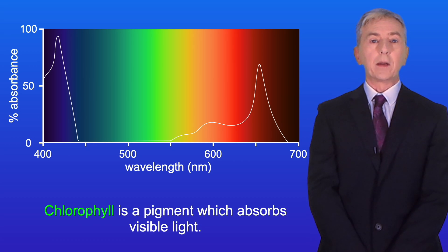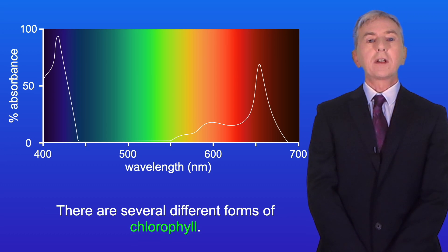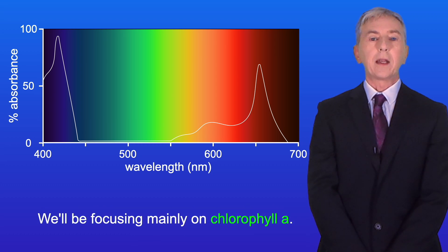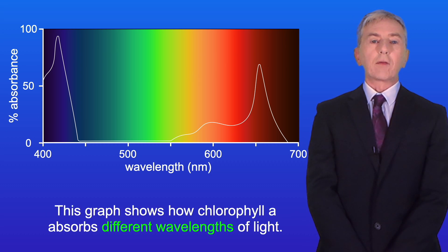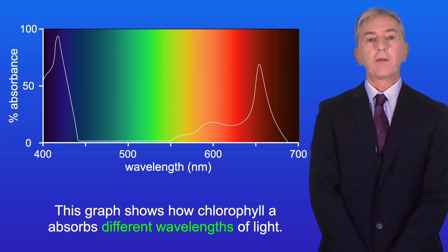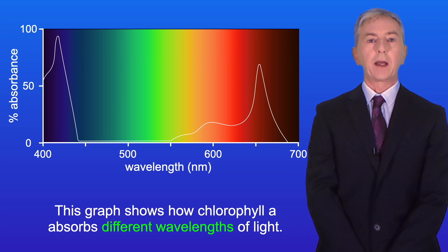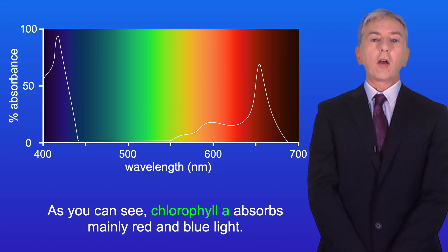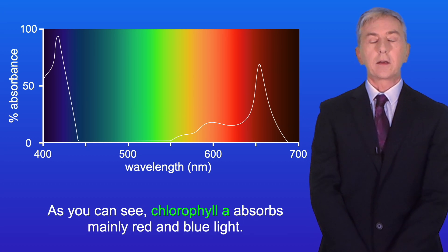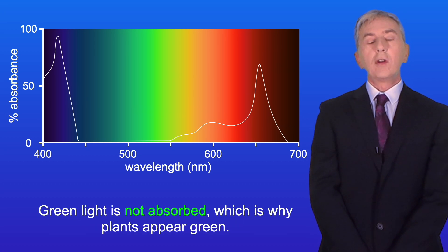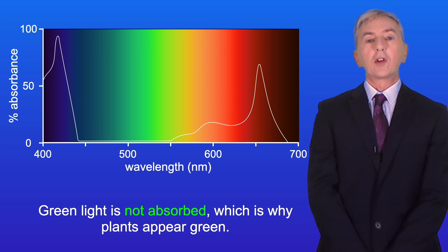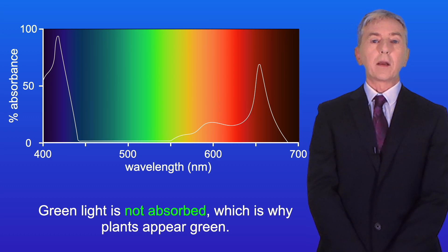Chlorophyll is a pigment which absorbs visible light. There are several different forms of chlorophyll but we'll be focusing mainly on chlorophyll A. This graph shows how chlorophyll A absorbs different wavelengths of light. As you can see chlorophyll A absorbs mainly red and blue light. Green light is not absorbed, which is why plants appear green.